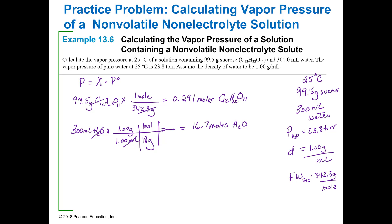Now we need the mole fraction of the water, because water is the liquid. The mole fraction of water equals 16.7 moles divided by the total moles, which is 0.291 plus 16.7. That gives a mole fraction of 0.983.